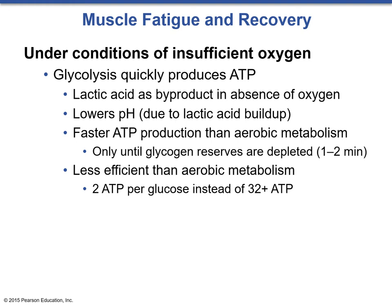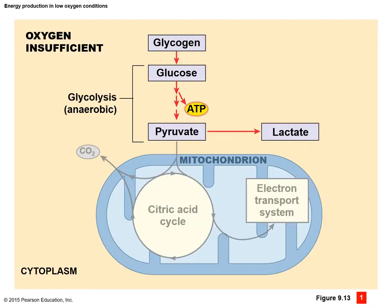Faster ATP production is caused by this, but it's not as efficient as aerobic metabolism. This is the process of anaerobic glycolysis. We take glucose, make two pyruvate molecules and two ATP, broken down from glycogen stores. However, if we don't have oxygen, we can't go into the mitochondria to make more ATP through the citric acid cycle and electron transport chain. So we have to rely on glycolysis, and pyruvate will start to make more lactate or lactic acid.